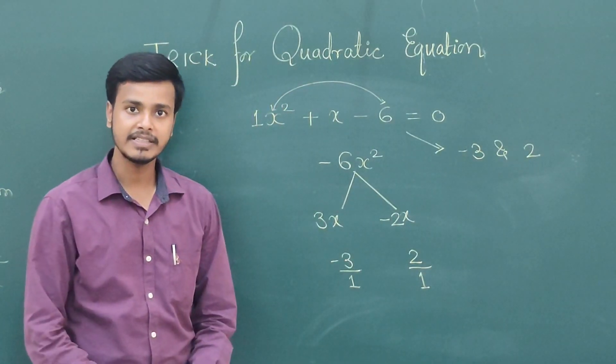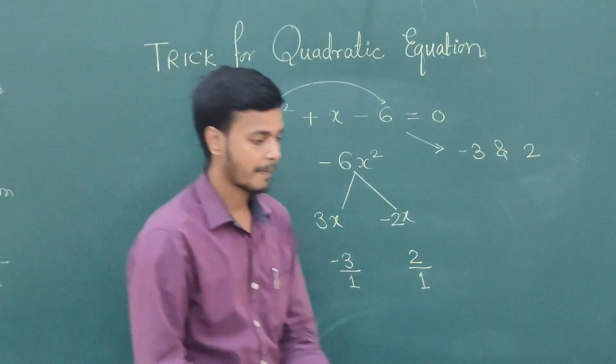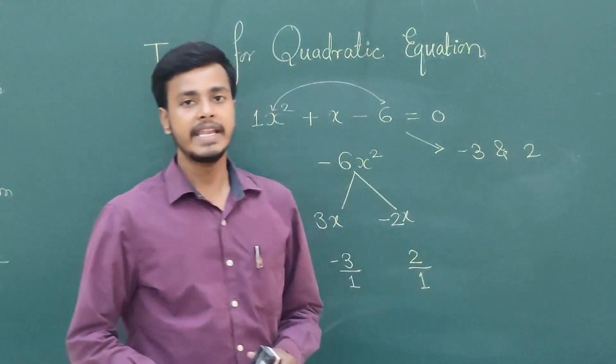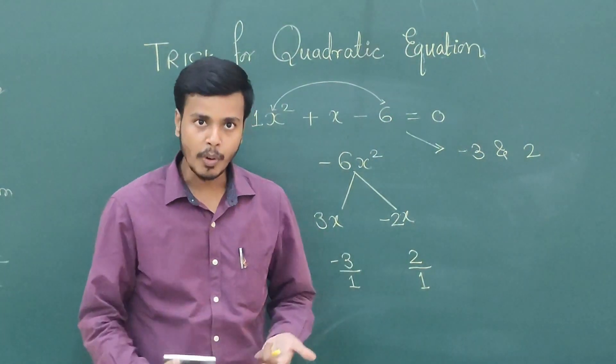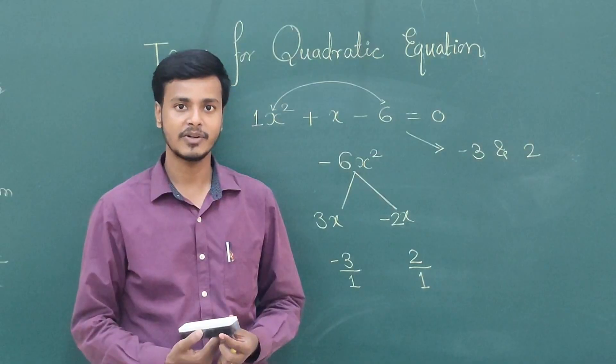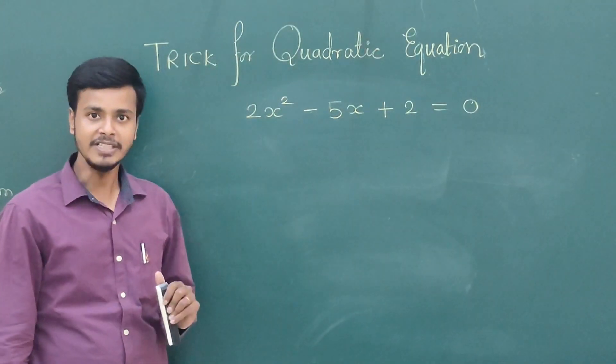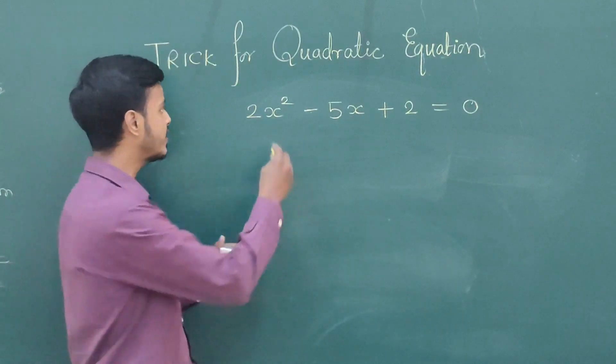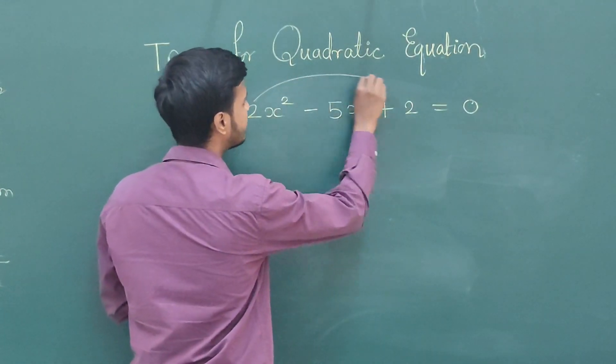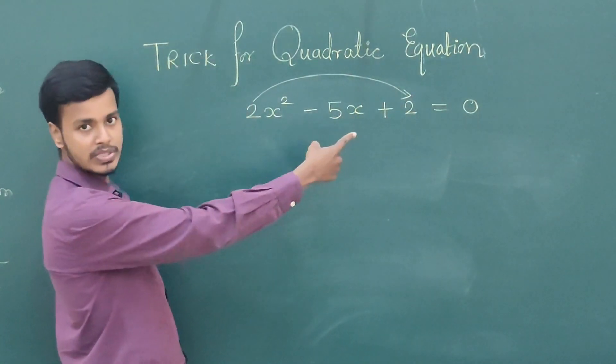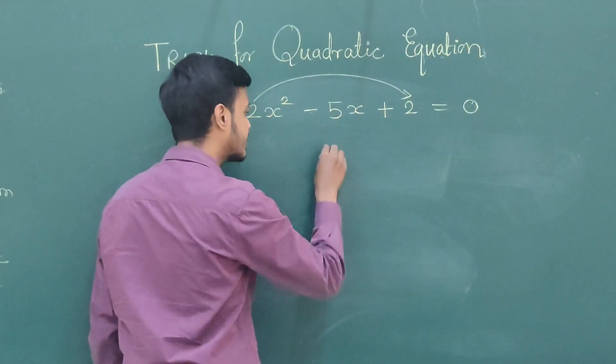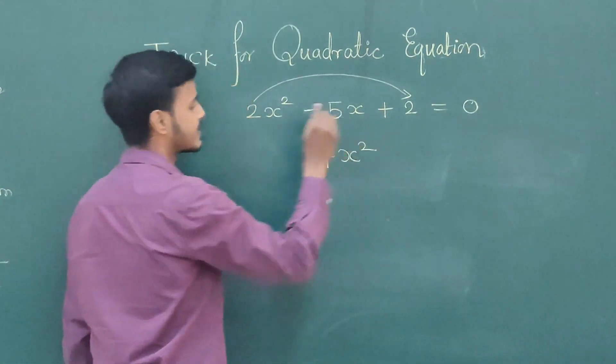Simple. Now we can take one more problem to make the idea more clear. Suppose we have this equation. As before, what we need to do? Multiply this with this. 2 into 4, and we have this as 4x squared.